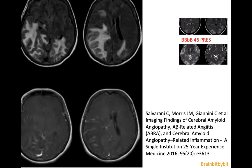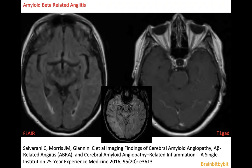The abnormalities can also be much more extensive, resembling PRES. For example, in this case the leptomeningeal enhancement gives the clue to the inflammatory pathology in CAA. And sometimes there are no white matter abnormalities but only some leptomeningeal inflammation — for example, in this case of ABRA.